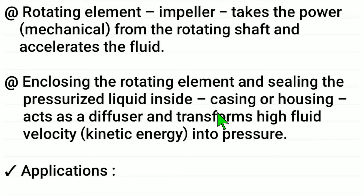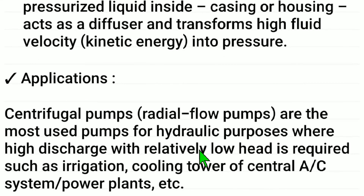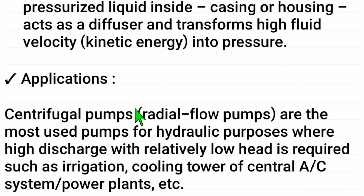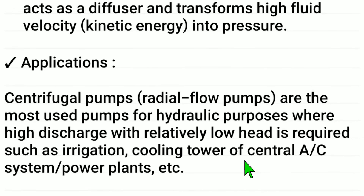The casing or housing acts as a diffuser and transforms high fluid velocity kinetic energy into pressure. Centrifugal radial flow pumps are the most used pumps for hydraulic purposes where high discharge with relatively low head is required, such as irrigation, cooling towers of central air conditioning systems, or power plants.